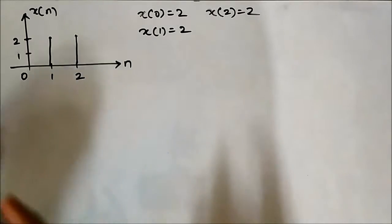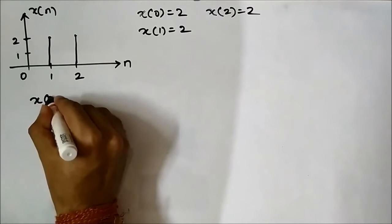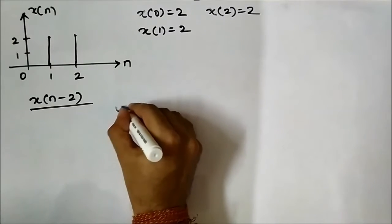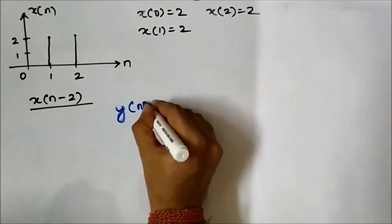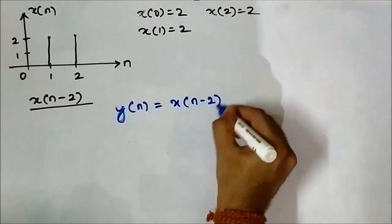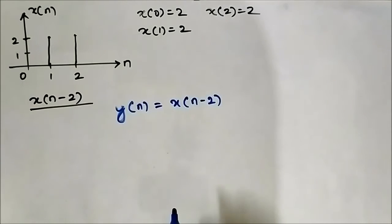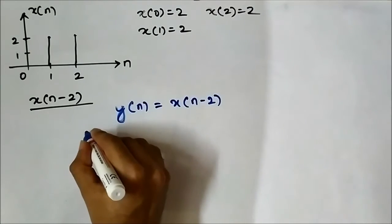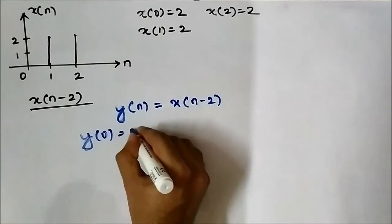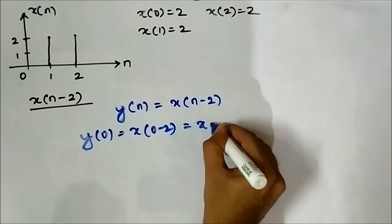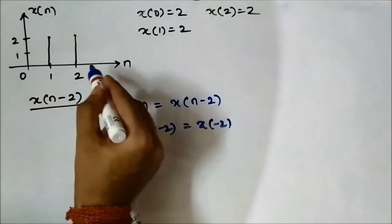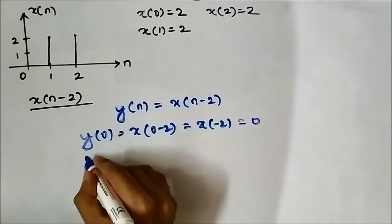Let us perform the shifting x[n − 2]. Similar to what we did in the continuous time domain, we create a new signal y[n] and equate it with x[n − 2]. We determine the values of y at different values of n. At n=0: y(0) = x(0 − 2) = x(−2) = 0, because there is no value of x[n] at n=−2. At n=1: y(1) = x(1 − 2) = x(−1) = 0.